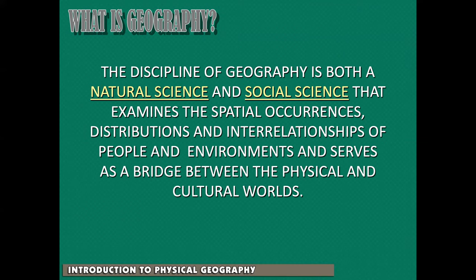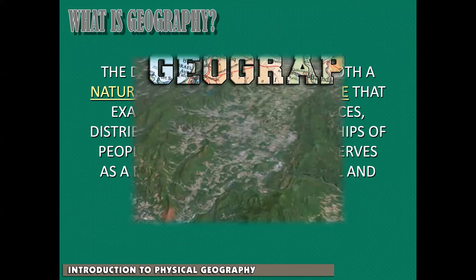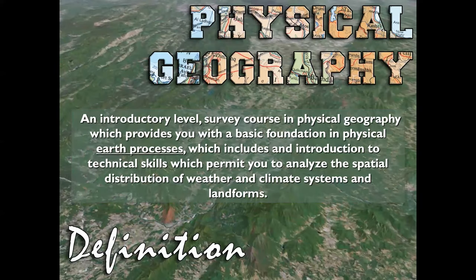Sometimes it's more focused on people, and that's a human geography class. Sometimes it is focused more on natural aspects, so that would be physical geography, or geology, or climatology, or any of those other disciplines more in tune with the natural world. Physical geography — this course is very shallow in that it covers a lot of information but doesn't cover it in great detail.